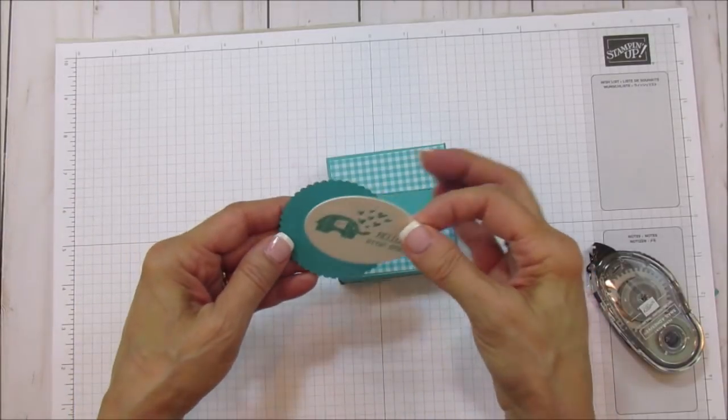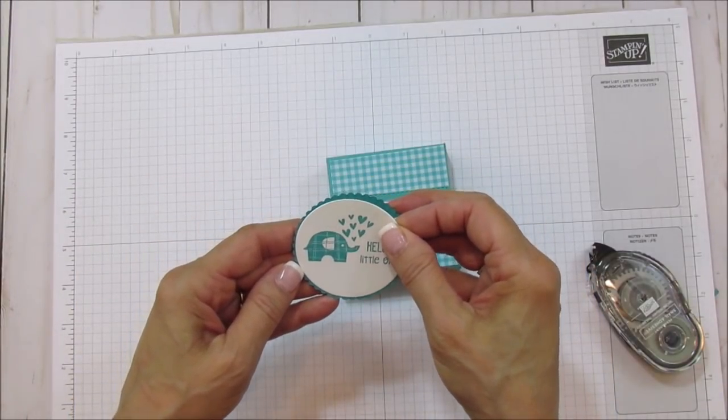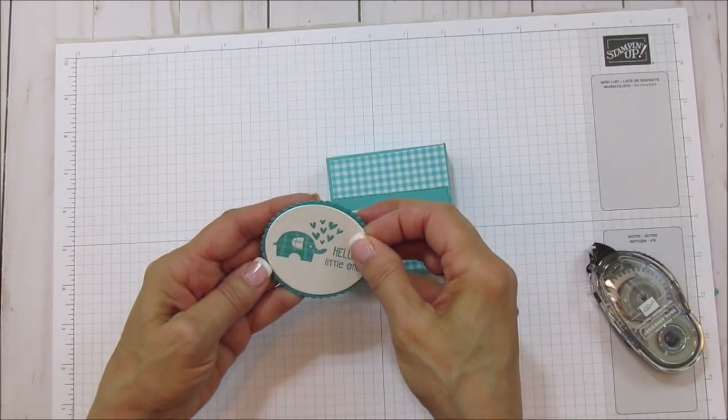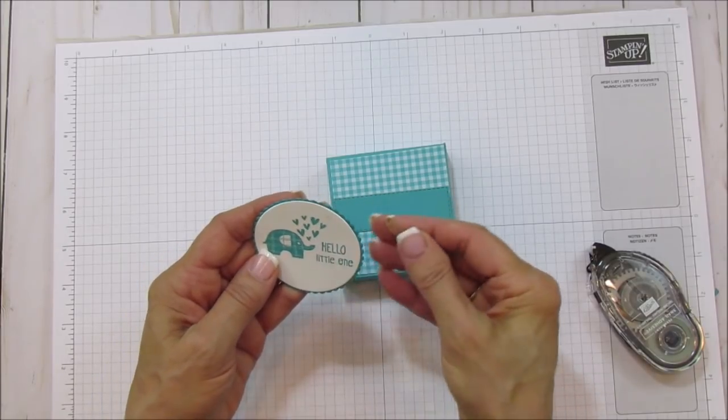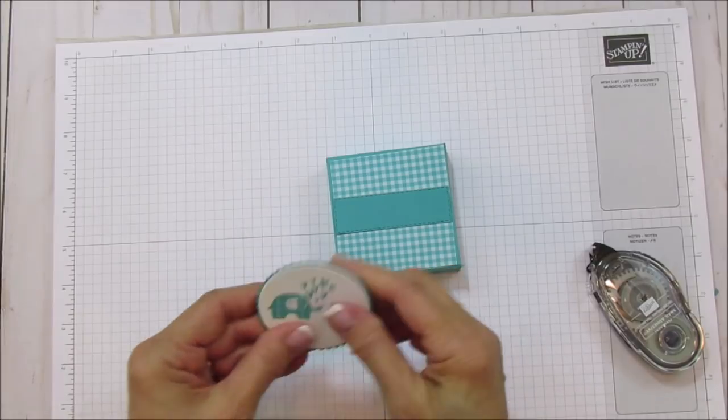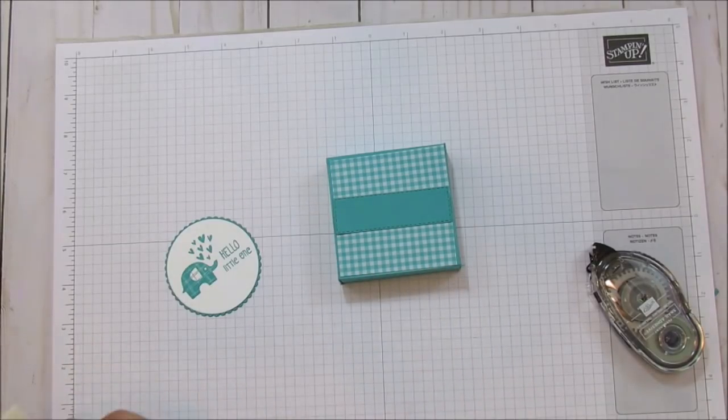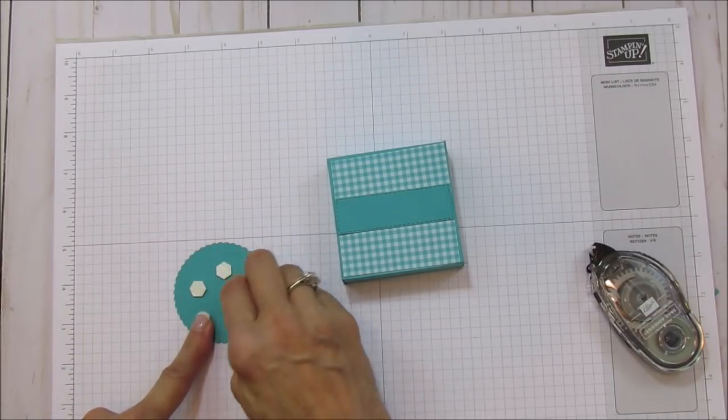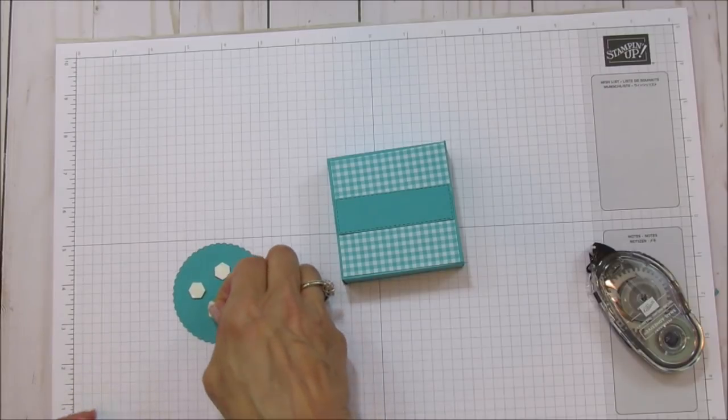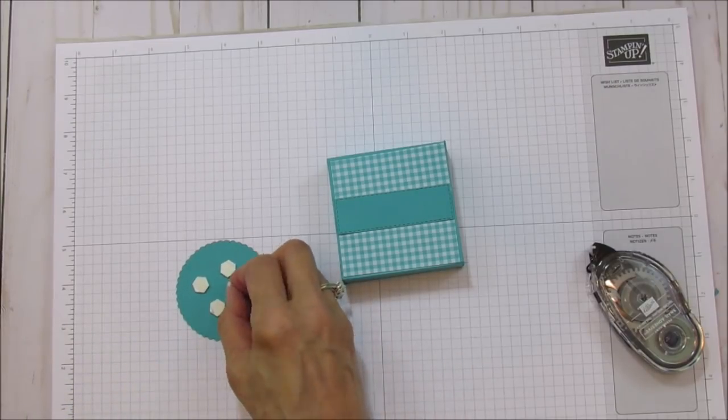I didn't even realize I was using a piece that was used already and it doesn't matter because we're adhering it to this. I'm going to grab some dimensionals. We're going to put some dimensionals on the back here. I think I'm going to put four because I like it to sit evenly.